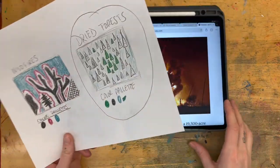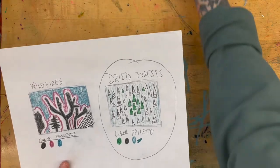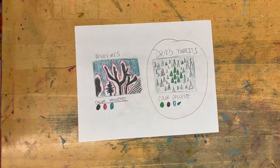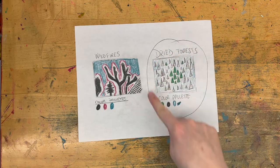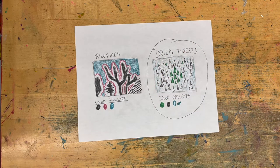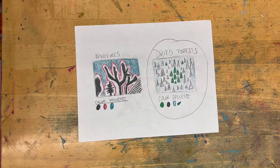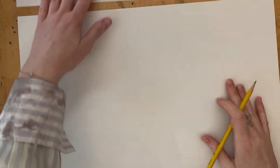That is how you create your sketches for this type of artwork. You'll need to select the one you want to turn into a painting. I circled the dried forests one — that was just my personal preference, I liked it better — so that's the one I'm going to be turning into a painting.